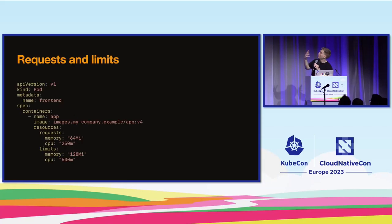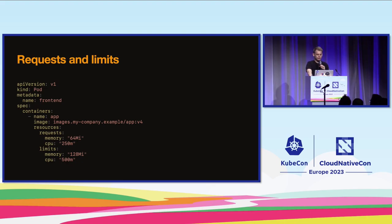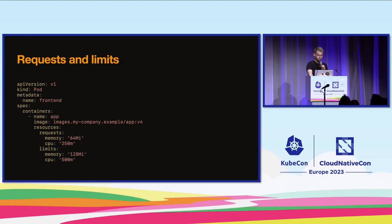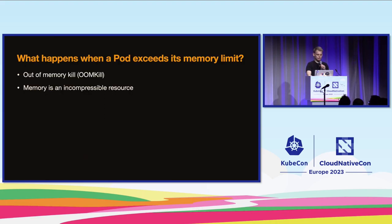Looking at a pod definition file, requests and limits are always set on a per-container basis. In this example, we've defined a memory request of 64 MiB and a CPU request of 250 milli-core. The limit is two times the request: 128 MiB of memory and 500 milli-core of CPU.